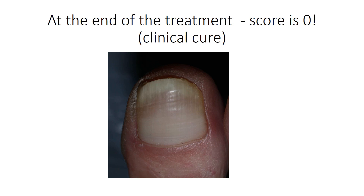At the end of treatment, the clinical picture showed an OSI score of zero — a clinical cure. The patient could clearly see the improvement in their nail and was very happy. Subsequent advice focused on preventing reinfection: keeping the skin around the nail and on the foot free from infection with regular applications of antifungal cream, since if heavier skin infection remained the nail could quickly become reinfected.